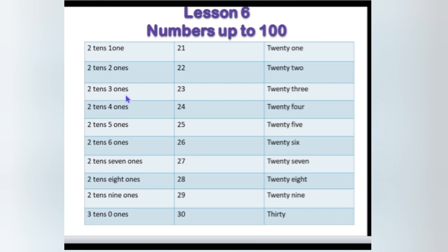Tell me, how many tens are in 23? Yes, 2 tens. How many ones are there in 23? 3 ones. So 2 tens and 3 ones make 23. The next: 2 tens, 4 ones — 24. 2 tens, 5 ones — 25.